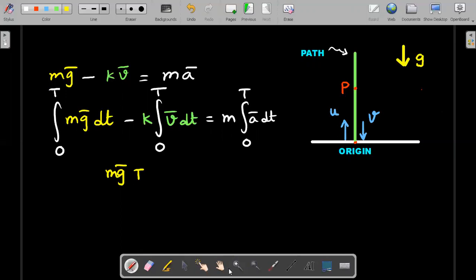And the second one which is interesting, this is by definition of kinematics. Integration of velocity vector over time for any duration is nothing but displacement vector. So that would be minus k into the displacement vector for the entire period. This should be equated to mass into, what is integration of acceleration vector over a period of time in kinematics? By definition of acceleration and velocity relation, it would be simply the difference of velocity vector.